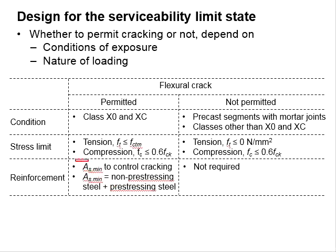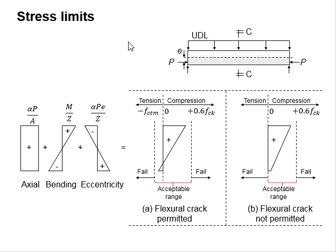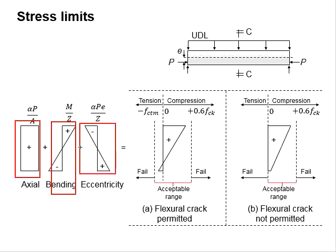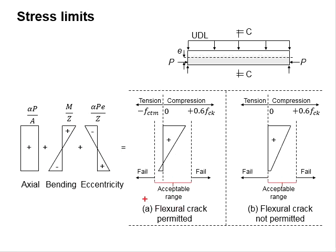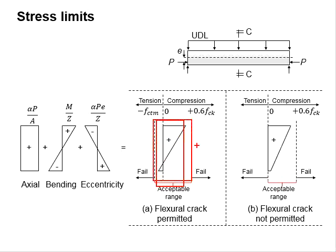A minimum amount of reinforcement bar is normally required to control cracking, and this minimum amount is inclusive of both non-prestressing steel and prestressing steel. The stress limit is graphically shown in this figure. The stress here represents the superposition of the axial bending and eccentricity stresses. When flexural cracking is permitted, the acceptable range falls between FCTM and 0.6 FCK, and the total stress which falls within this range is considered acceptable.